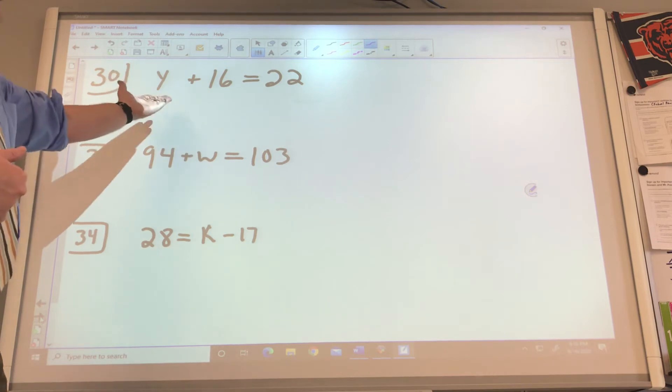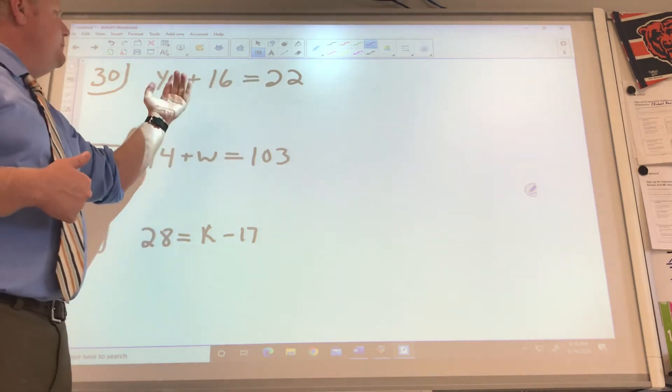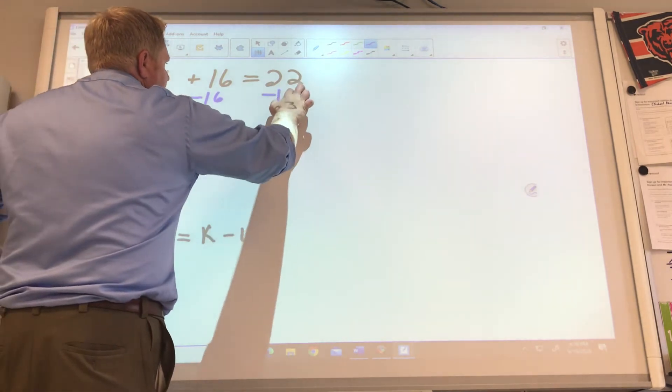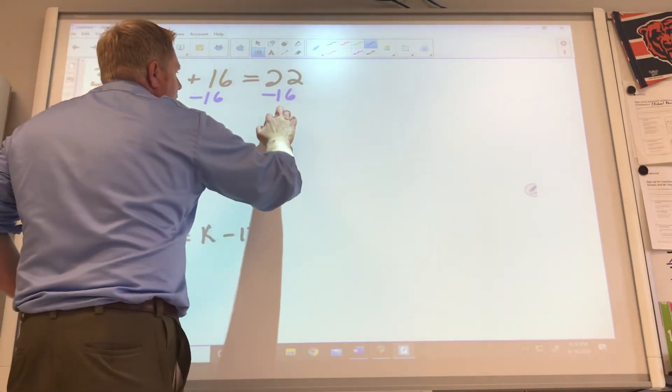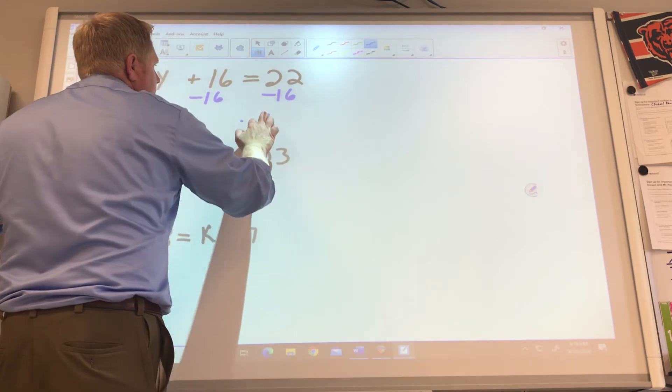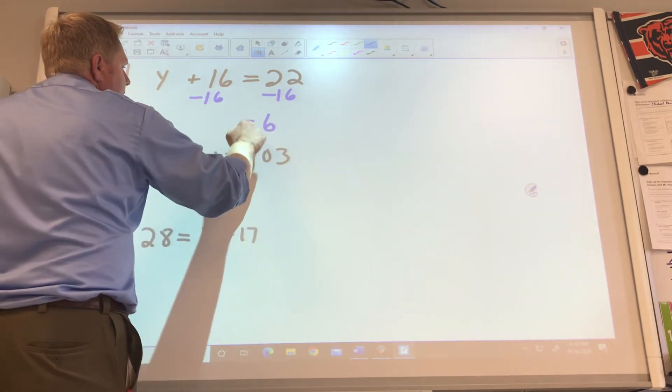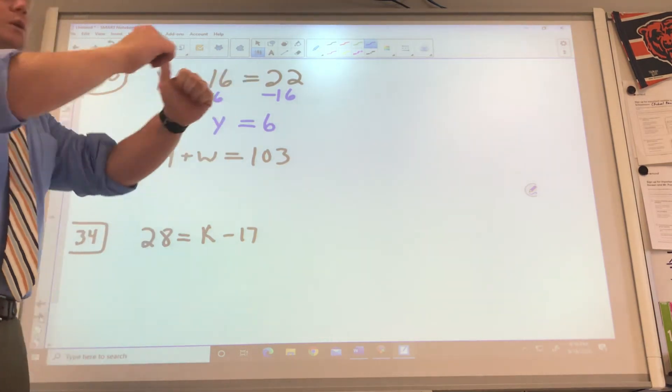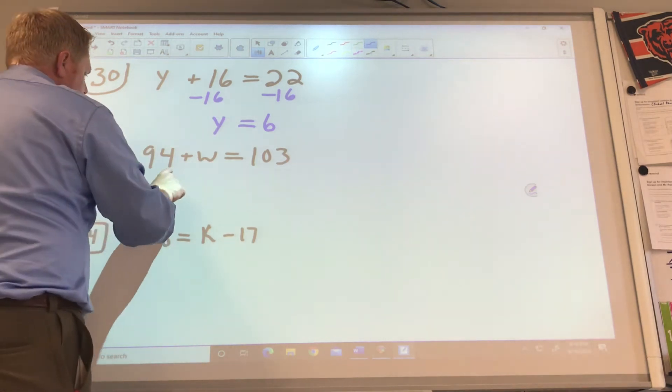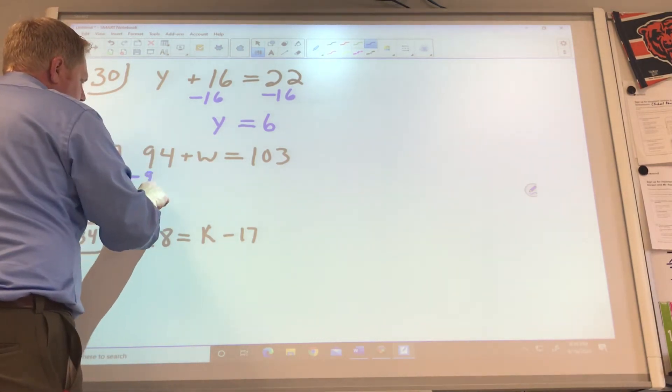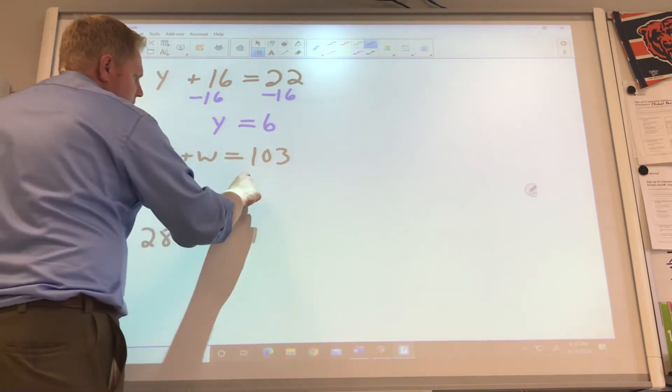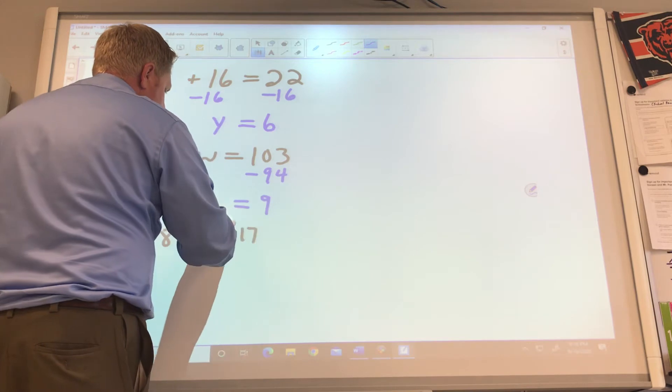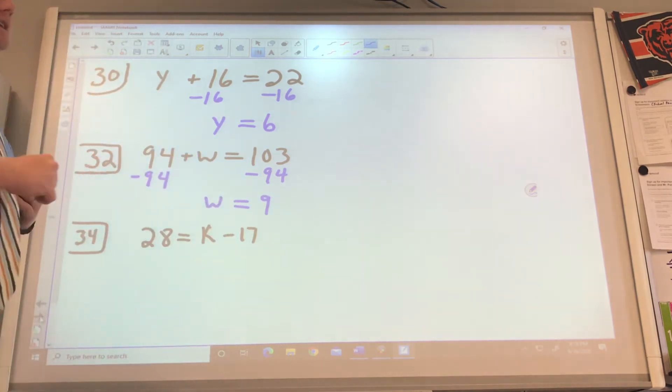Continuing with addition problems, work on left or right. Hopefully you see left because it's got the variable. Subtract 16. Subtract 16. That means 6 is the answer here. And Y is the answer here. 6 plus 16 makes 22. Good answer. Inverse operations, we're going to do subtract 94 because W will be by itself. Subtract 94. We get 9 as an answer. W equals 9.